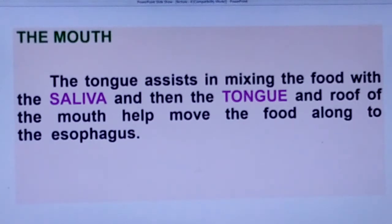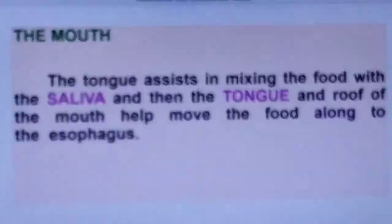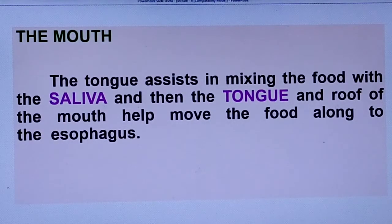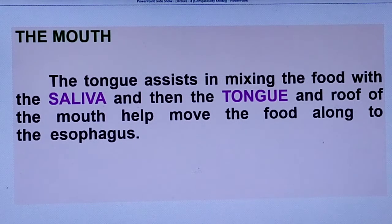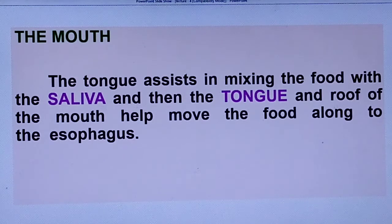Next, the tongue. In the mouth, the tongue assists in mixing the food with the saliva. The tongue and the roof of the mouth help move the food along toward the esophagus. The saliva glands create saliva, which helps in mixing the food. Saliva contains an enzyme that helps digest the food.